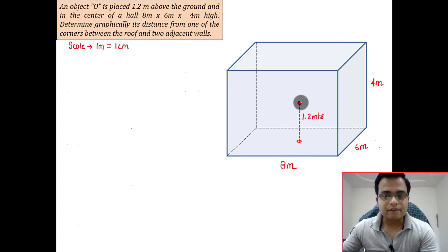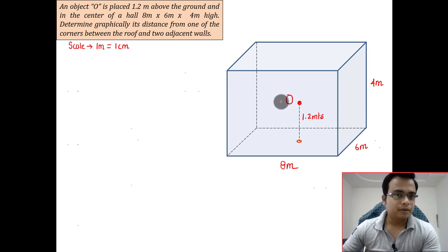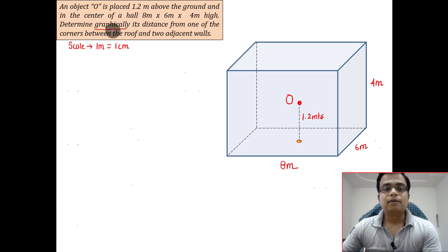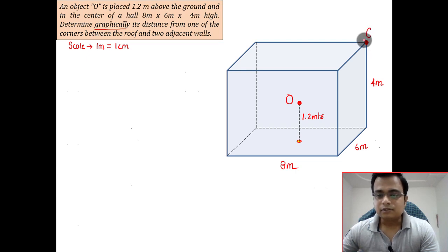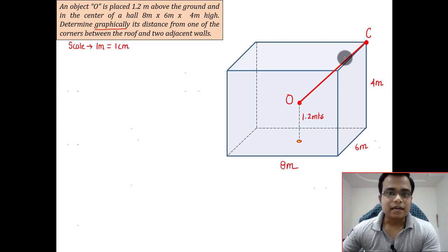Right here we have an object, let's call that capital O. Now determine graphically, that is with the help of drawing not via math, its distance from one of the corners between roof and two adjacent walls. This is the roof, this is the back wall, and the wall adjacent to this back wall is this one right here. They share a common corner somewhere here, let's call this capital C. What we're supposed to find is the distance between this object and this corner C. Let us join that with the help of a line, and this length of the line is something we need to work out with the help of the concept of projection of lines.